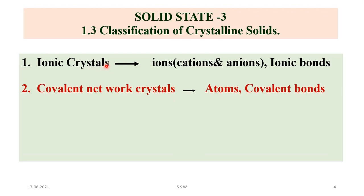The second type is covalent network crystal. In covalent network crystals, atoms are the constituent particles, and these atoms are linked by covalent bonds through mutual sharing of electrons. Examples include diamond, graphite, fullerenes, nanotubes, silicon carbide, boron nitride, corundum, and SiO2.